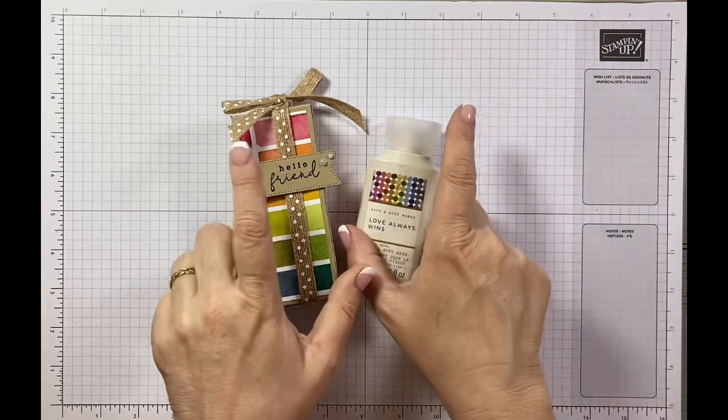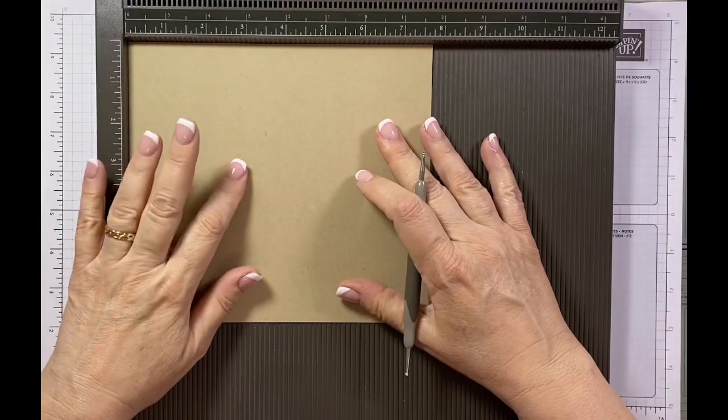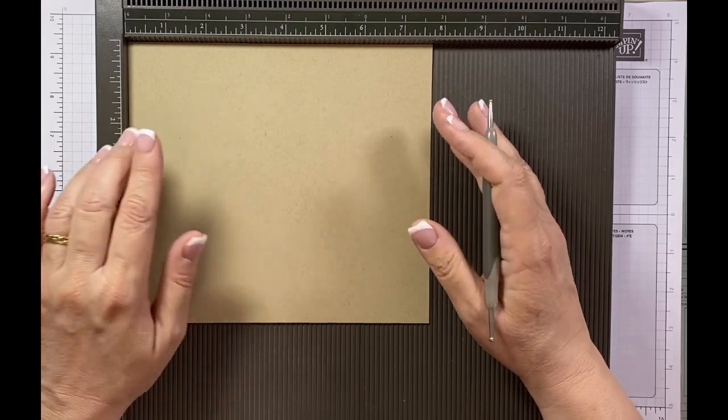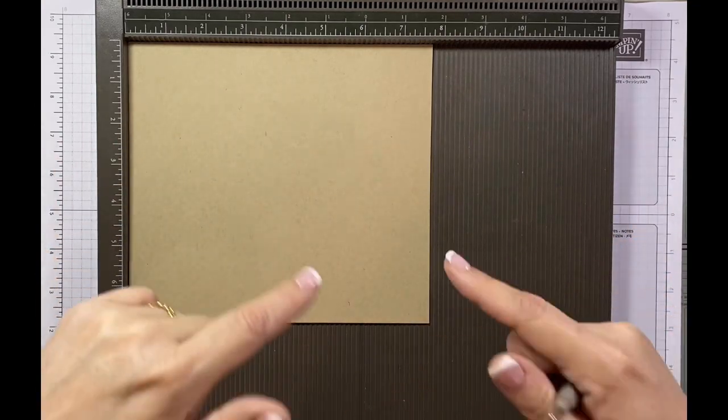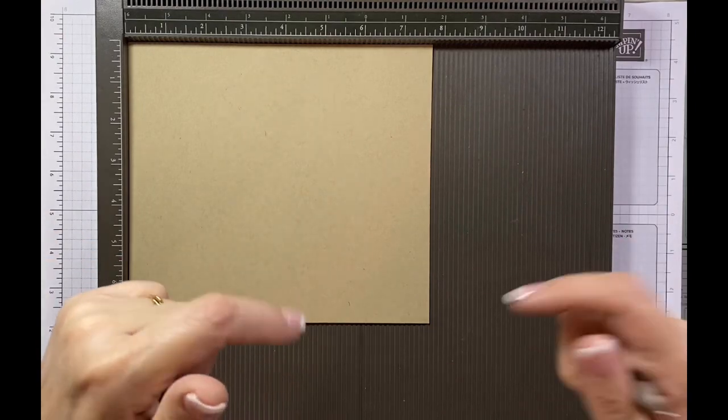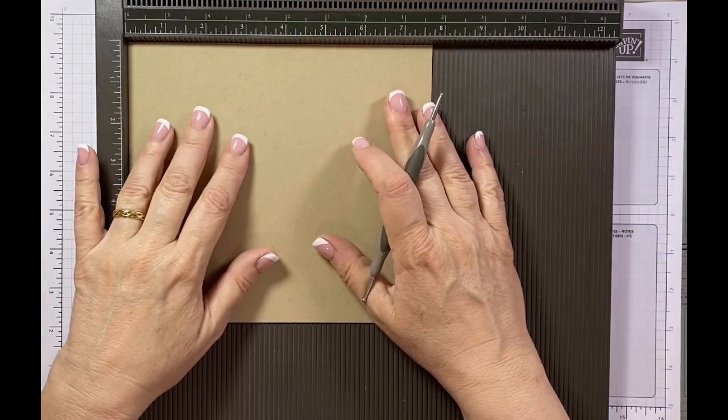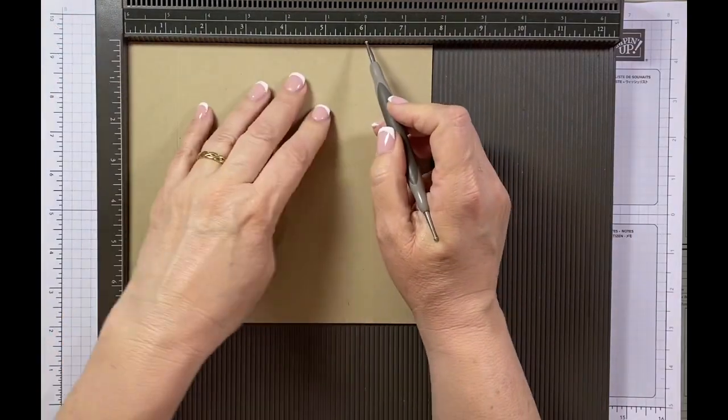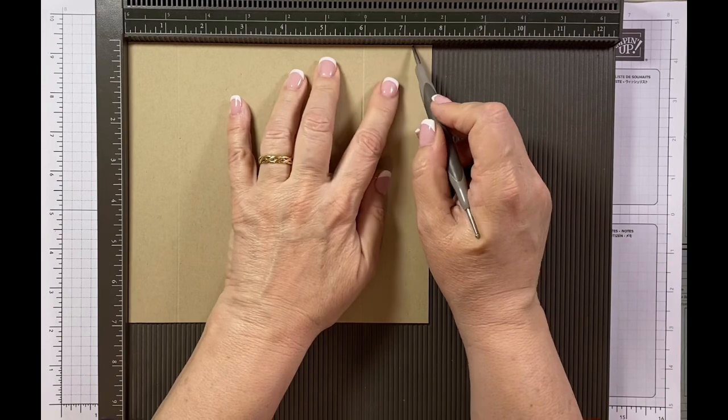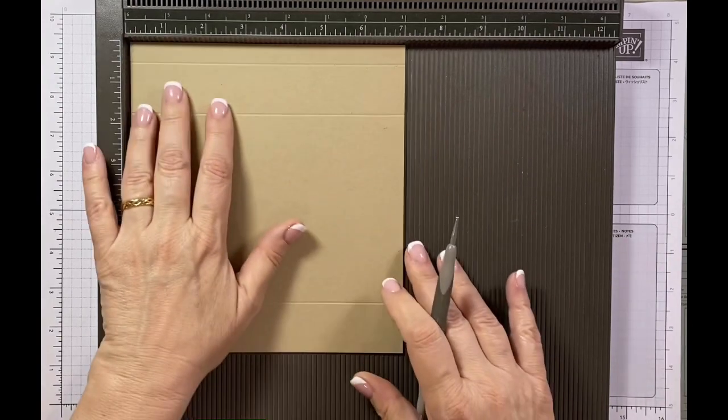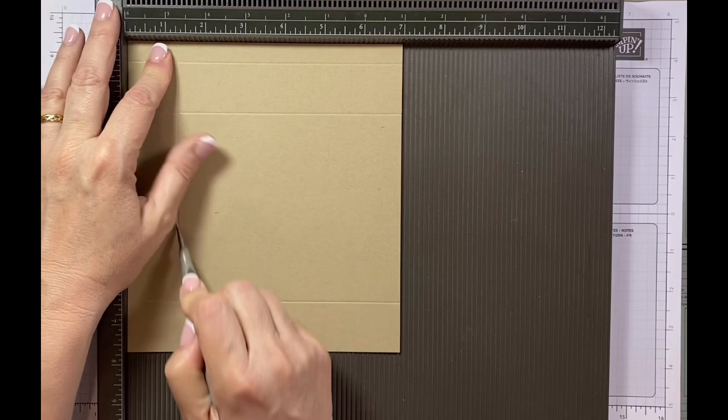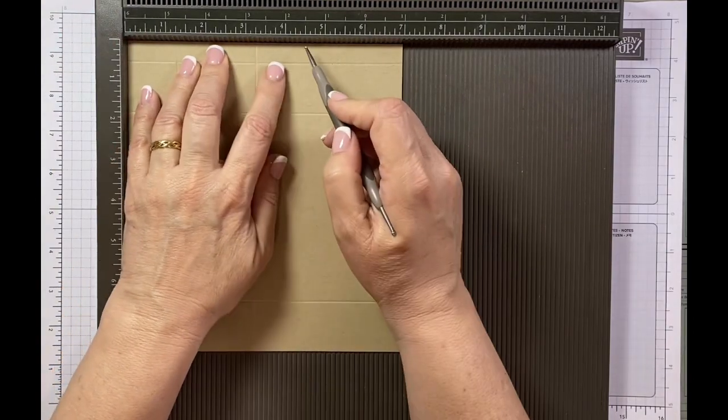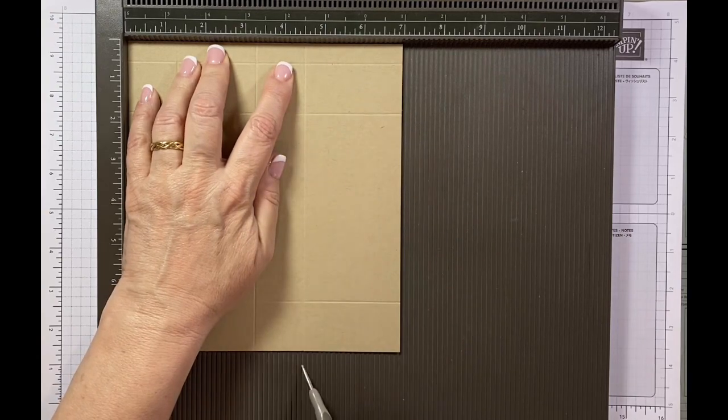So the cardstock I'm using is Crumb Cake. The measurements in inches are seven and three quarters by seven inches. I'll be sure to put the centimeters as well as the inches in my blog post which I'll link below. On the long side I'm going to score it one and a quarter, six, and seven and a quarter. Then on the short side I'm going to score it one and a quarter, three and a quarter, four and a half, and six and a half.